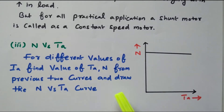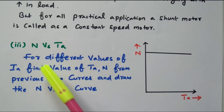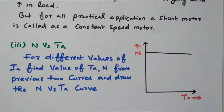So in this video, we discussed the characteristics of a DC shunt motor. Three different characteristics were analyzed: the first is armature torque versus armature current; the second is speed versus armature current; and the third is speed versus armature torque. Subscribe this channel for more videos and notifications. Soft copy of this material is available in the drive; the link is given in the description box. Thank you for listening.